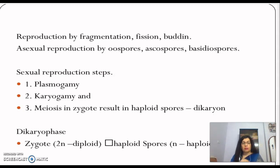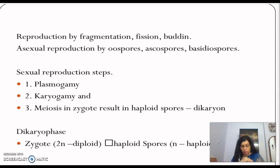Sexual reproduction involves the following steps. Plasmogamy is the fusion of the protoplasm of two motile or non-motile gametes. When nuclei fuse, it is called karyogamy. Karyogamy means the fusion of two nuclei. Under meiosis in the zygote, this results in haploid spores.